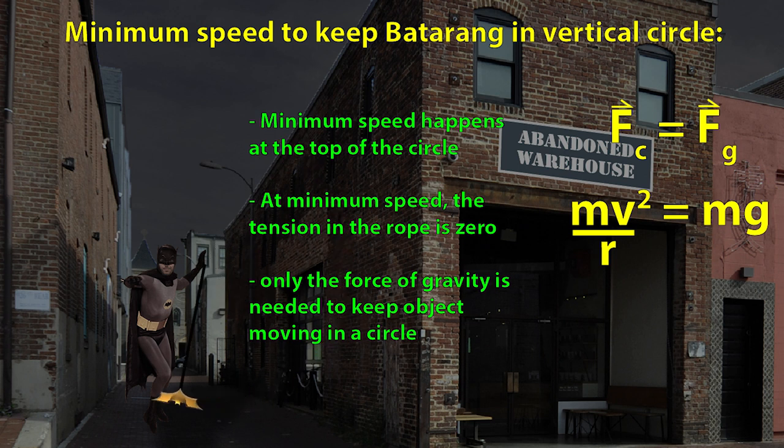The mass on either side is the mass of the batarang and that cancels out. That's going to leave us with v squared over r equals acceleration due to gravity.